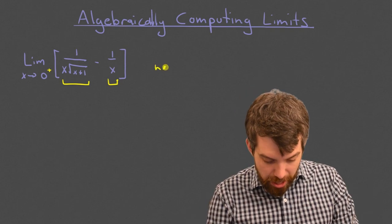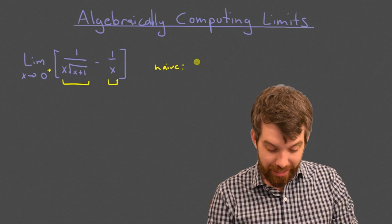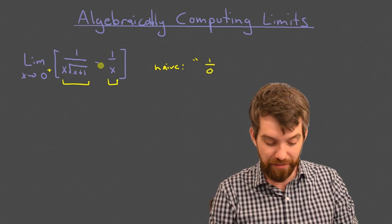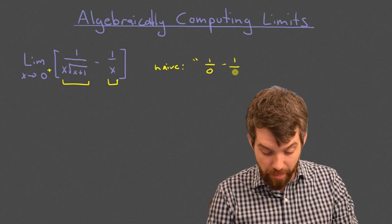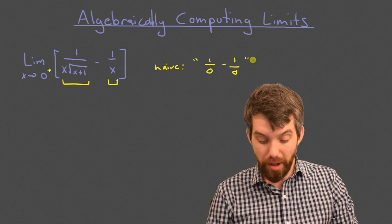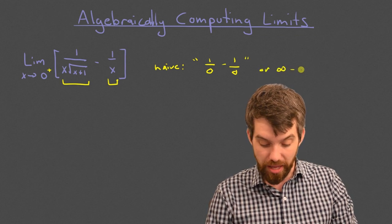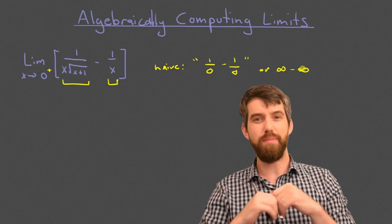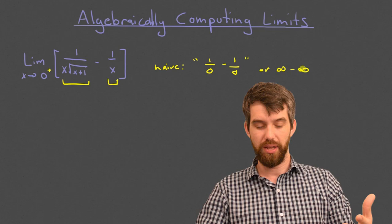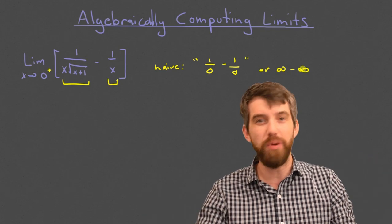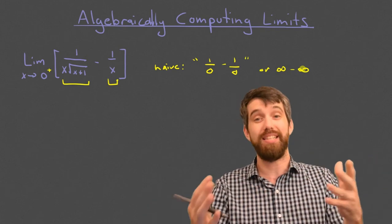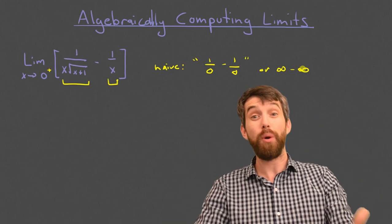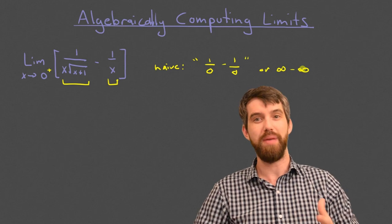Taking this naive approach, it looks like the first term is 1 divided by 0, and then minus 1 divided by 0 on the right — in other words, it looks like infinity minus infinity. The point isn't that this is mathematically rigorous; it suggests we don't have an obvious answer. Infinity minus infinity is indeterminate — it depends on how fast these things grow. So we can't just plug numbers in; we're going to have to do some formal algebra.